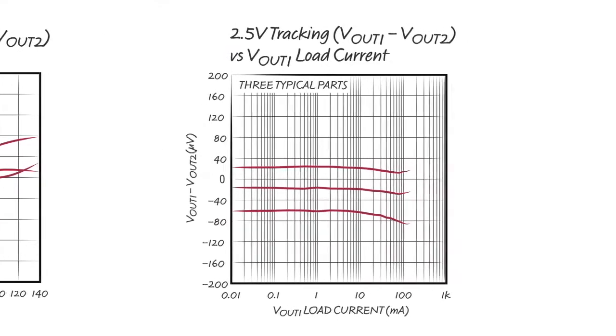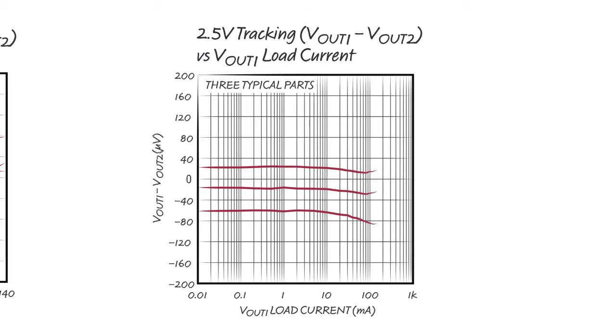The second plot shows as the load on output 1 increases from 10 microamps to 150 milliamps, there is little change in tracking. While the outputs track well, they are also independent from each other, especially if they are powered separately.